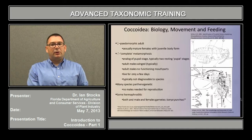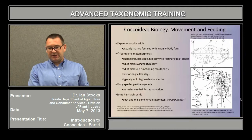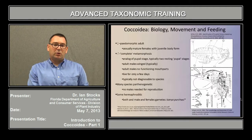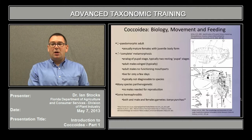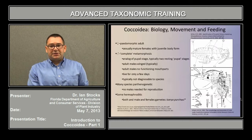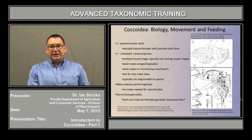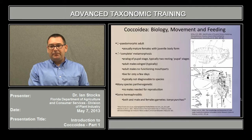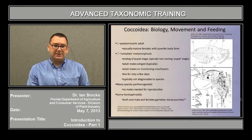By and large, adult males are not diagnosable to species. The practical taxonomy of Coccoidea relies almost exclusively on the adult female stage. And even though the males have a great deal of morphological interest, the taxonomy is not available to use them to get species IDs for most cases.